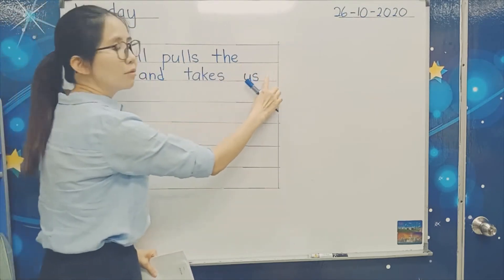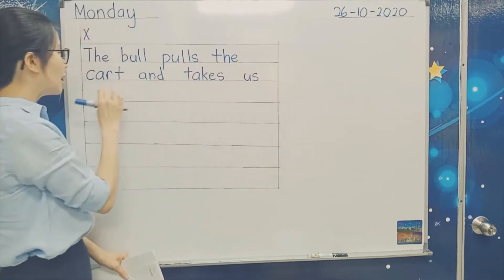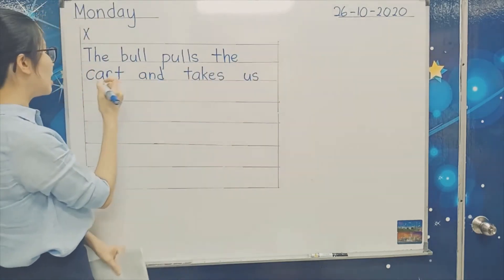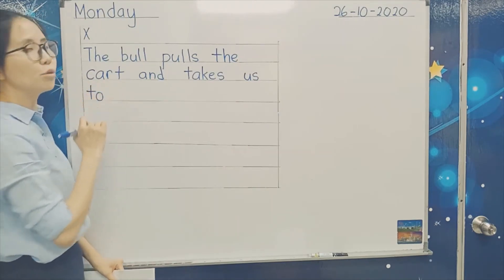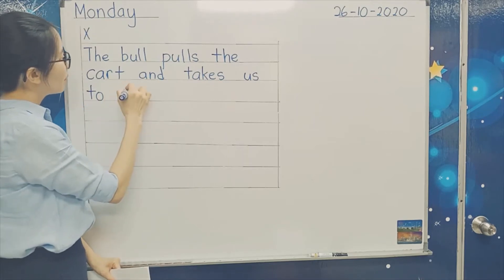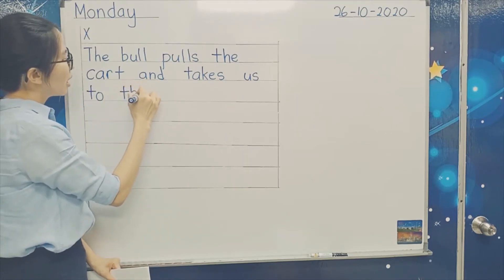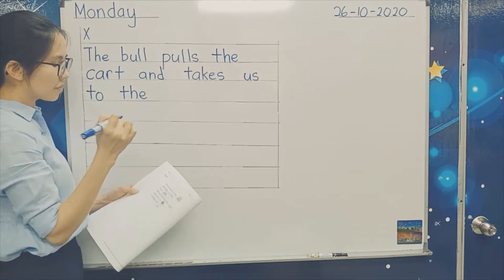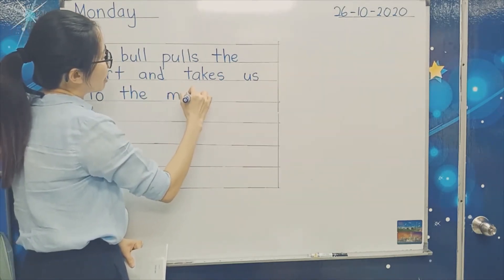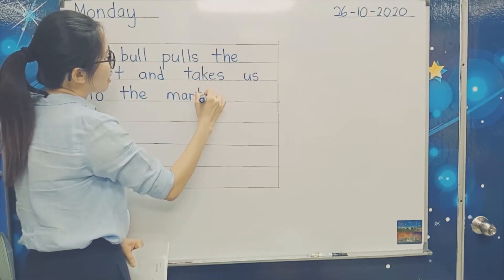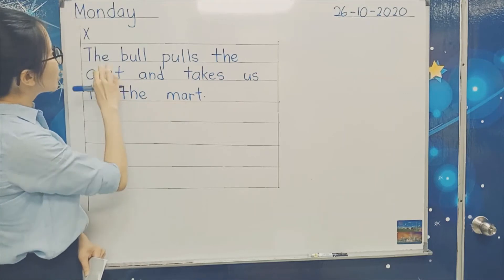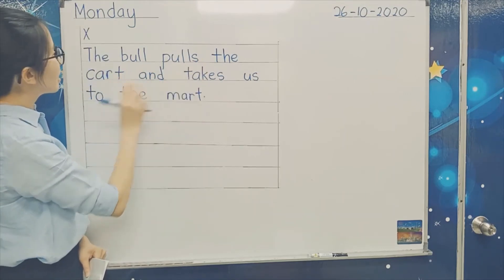So here we have no space. You can write down here. I'm going to write T-O, to. And then you put one finger, T-H-E, the. And last one, you put here, put one finger and write M-A-R-T, mart. Okay, so the bull pulls the cart and takes us to the mart.